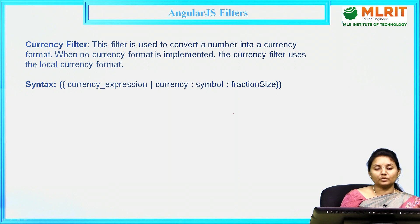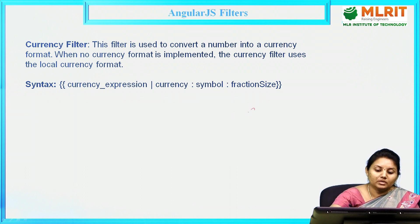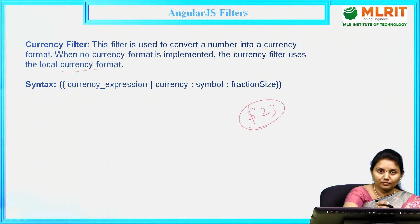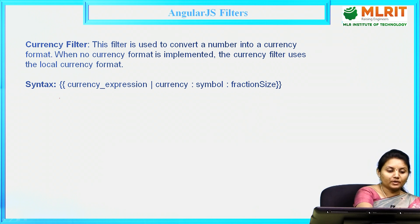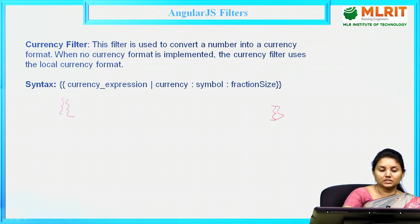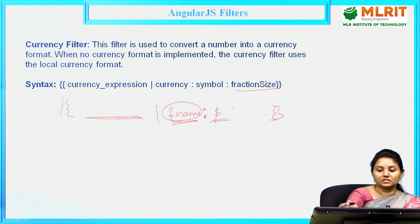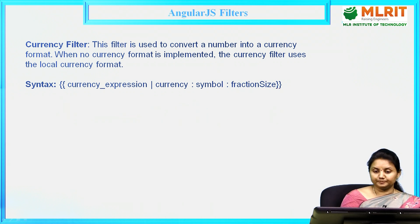Moving to the filters — first and foremost is the currency filter. This filter is used to convert a number into currency format. You have a number and you need to print it like dollar 23. When no currency format is specified, it uses the local currency format. The syntax is: in double braces, write the expression, pipe symbol, then the filter name 'currency'. A colon lets you specify the currency symbol — like dollar — and the fraction size.